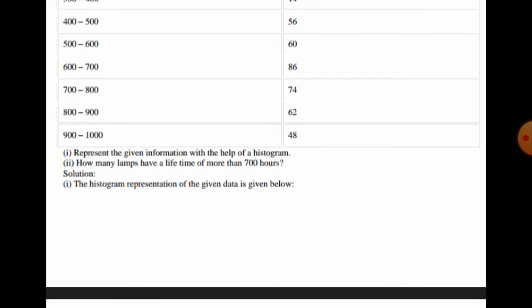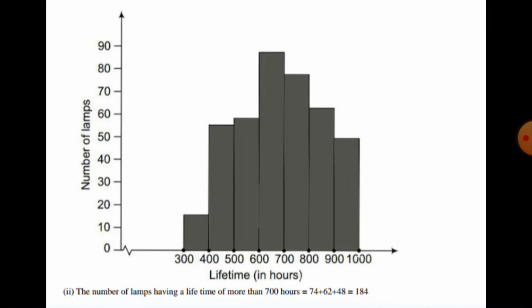In the second case, we have to find how many lamps have a lifetime of more than 700 hours. For more than 700 hours, we add the frequencies: 74 + 62 + 48 = 184. So 184 lamps have a lifetime of more than 700 hours.